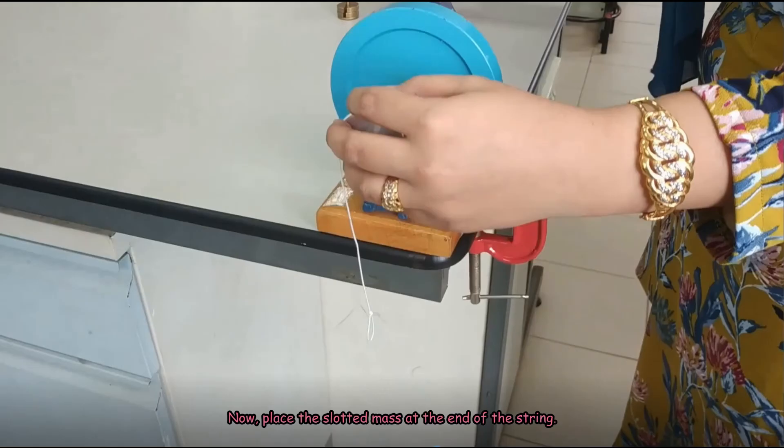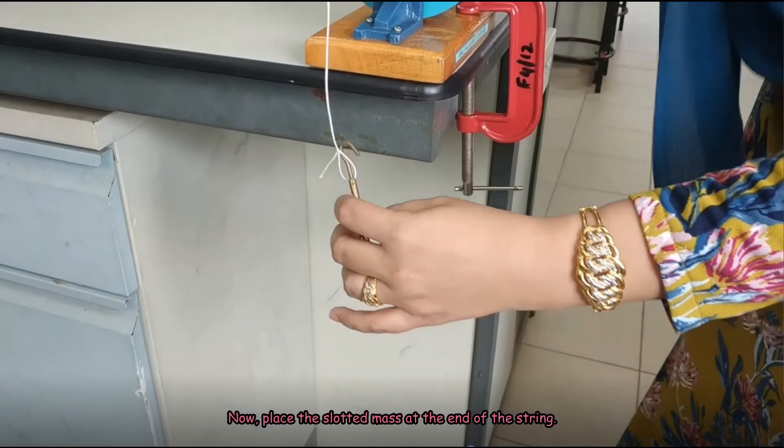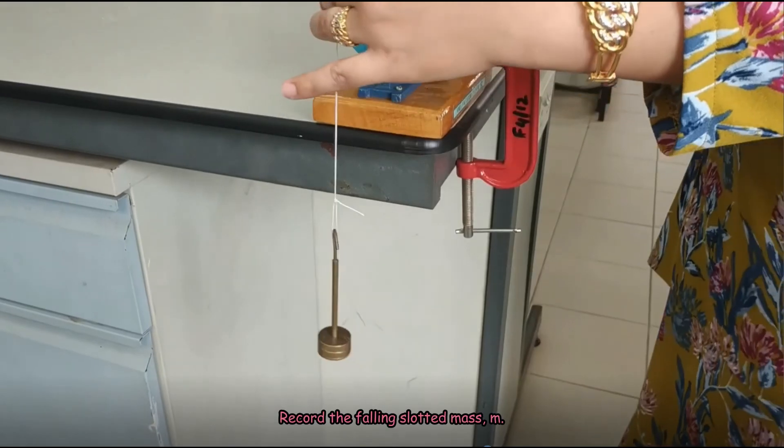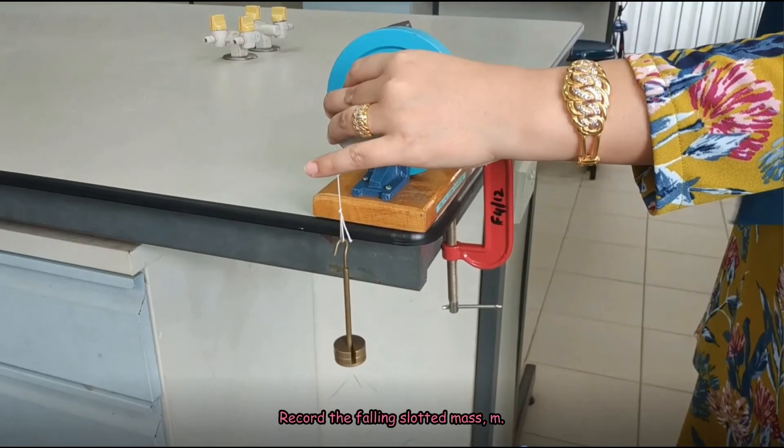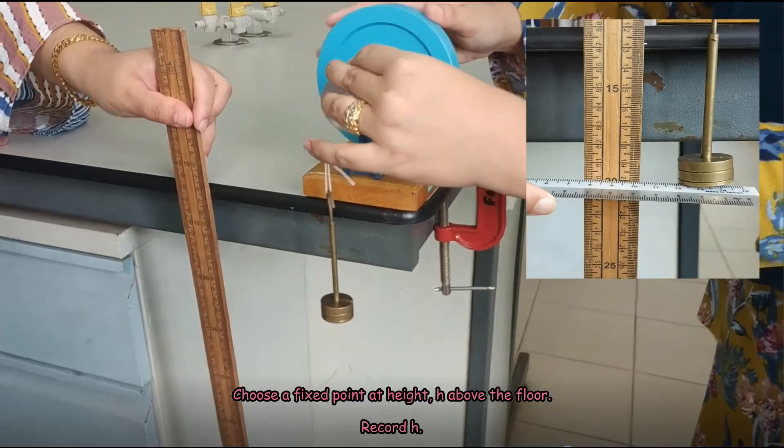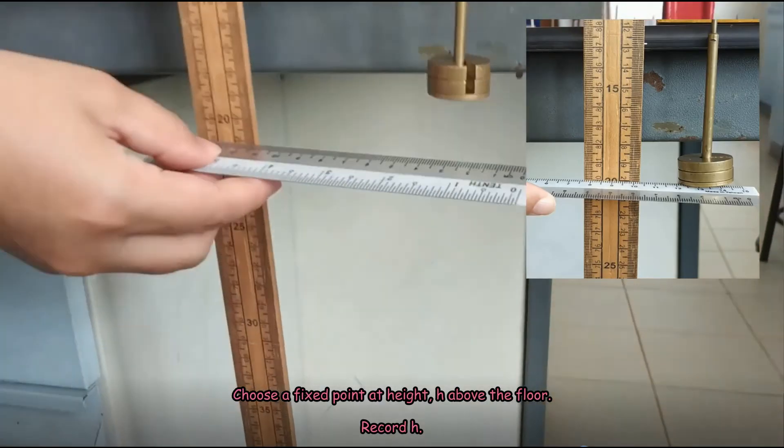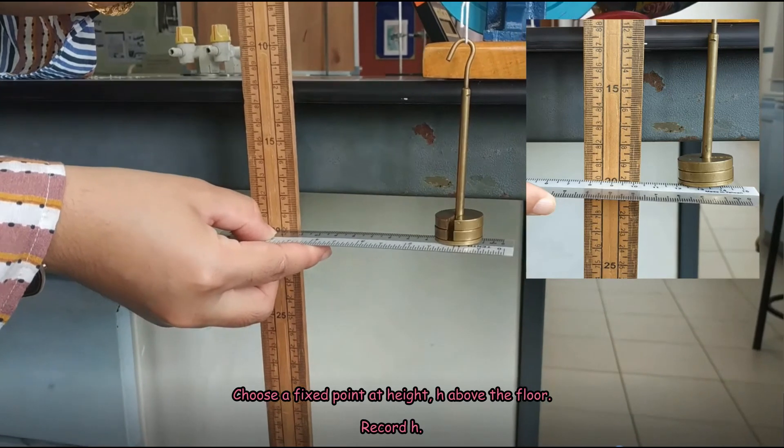Now, place the slotted mass at the end of the string. Record the falling slotted mass M. Choose a fixed point at height h above the floor and record h.